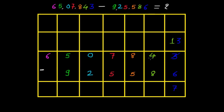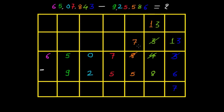Now we borrowed 1, so the 4 in the tens place becomes 3. We have to subtract 8 from 3, but again 3 is the smaller number, so we cannot subtract 8 from 3. We have to borrow 1 from the 100th place. I cross this 3 and write 3, borrowing 1 from the hundreds, crossing the 8 and writing 7. Now 13 minus 8 is 5, so we write 5.